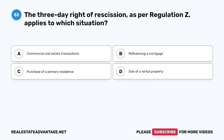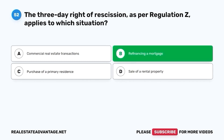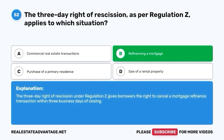Question 52. The three-day right of rescission as per Regulation Z applies to which situation? A. Commercial real estate transactions. B. Refinancing a mortgage. C. Purchase of a primary residence. D. Sale of a rental property. The correct answer is B. Refinancing a mortgage. The three-day right of rescission under Regulation Z gives borrowers the right to cancel a mortgage refinance transaction within three business days of closing.